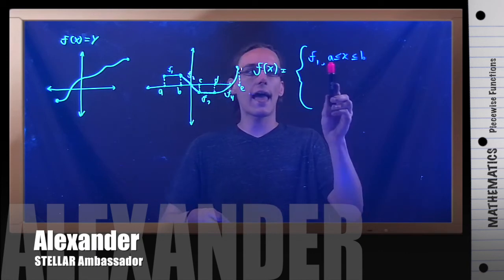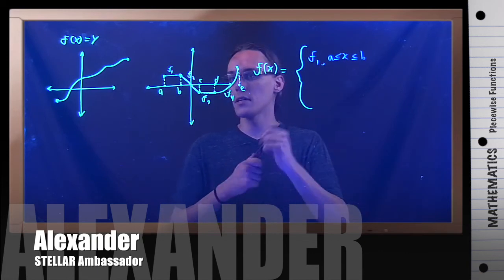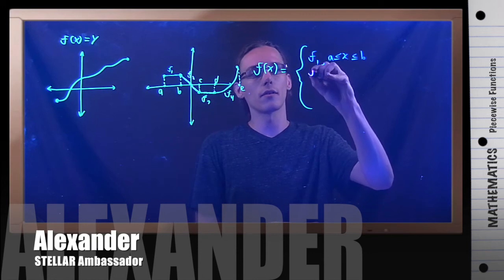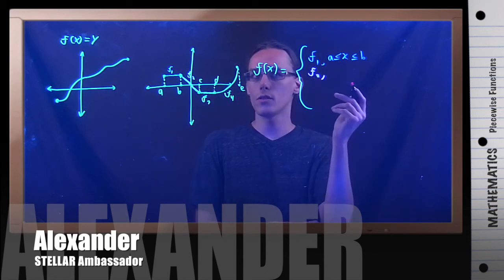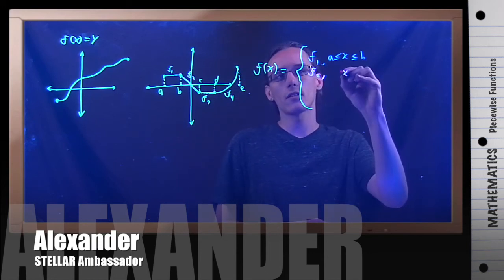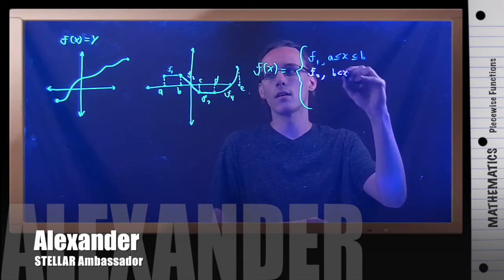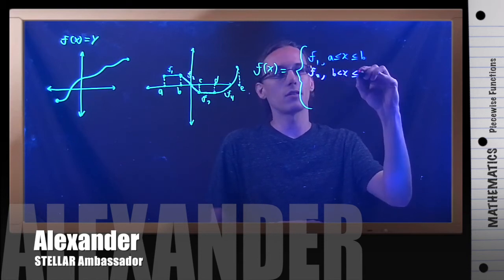Okay, then when we're not in this area anymore, now we're using function F2. And when do we use it? Well, we use it when x is greater than b, but less than or equal to c.